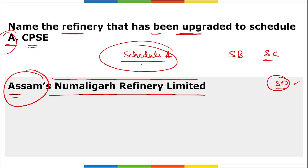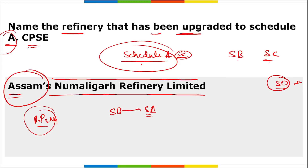So Schedule A is the best, where CPSEs can make investment decisions within a certain limit without requiring approval from the central government. The Ministry of Petroleum and Natural Gas announced that Numaligad Refinery Limited — the largest refinery in Northeast India in Assam — has been elevated from Schedule B to Schedule A. With this new status, NRL became eligible to achieve Navratna company status and will have the freedom to invest up to 1,000 crore rupees without seeking central government approval.